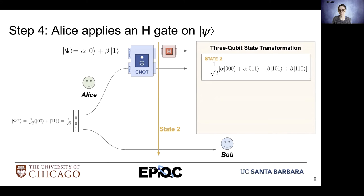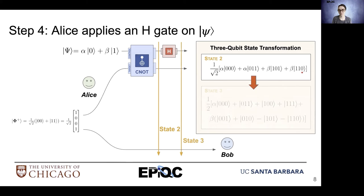So state two is: one over square root of two times (alpha ket zero zero zero plus alpha ket zero one one plus beta ket one zero one plus beta ket one one zero). And that transforms into state three as follows.